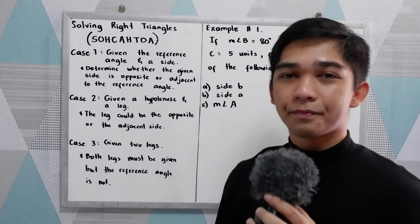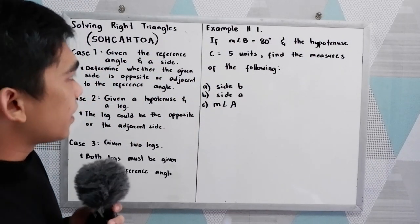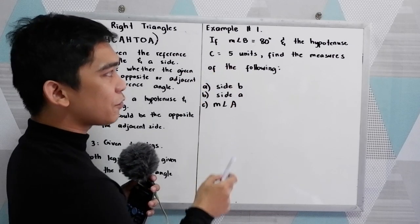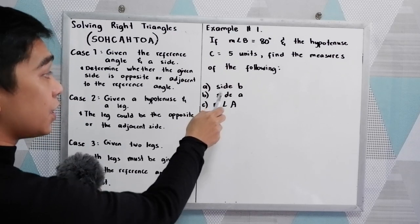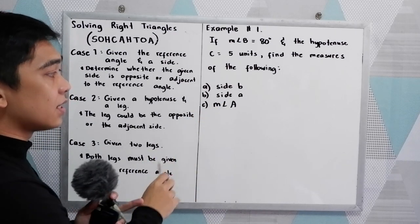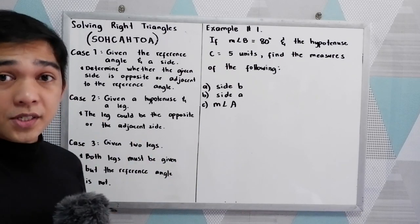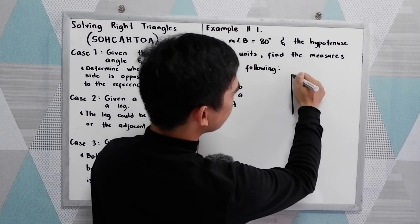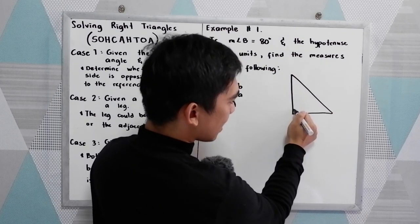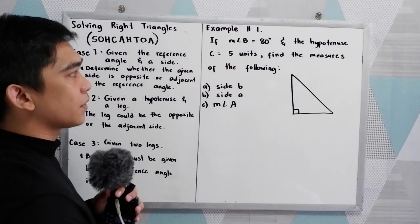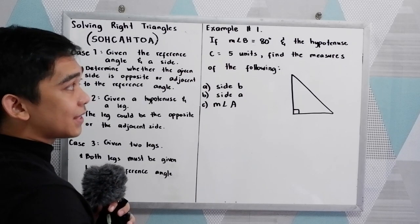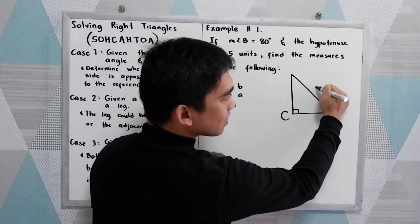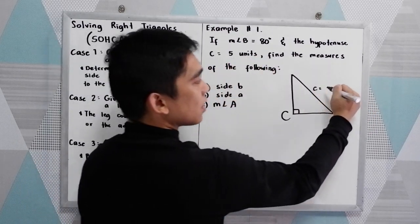Now let's have problem number one. For example number one: if measure of angle B is equal to 80° and the hypotenuse C is equal to 5 units, find the measures of the following — A: side B, B: side A, and C: measure of angle A. Let us first illustrate our triangle. We have our right triangle with 90 degrees. Angle B is 80°, and the hypotenuse C is equal to 5 units.